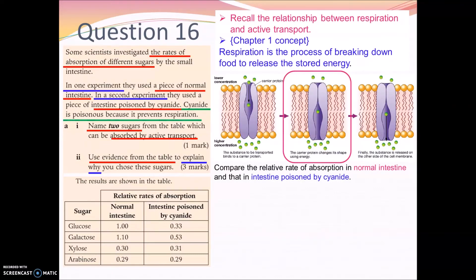For question 16, we are investigating the rate of absorption of different sugars in the small intestine. There are two parts: first using normal intestine, and second using intestine poisoned by cyanide. Cyanide is a poisonous chemical that can inhibit or stop respiration. The core concept here is that you need to relate respiration and active transport together. Respiration is the breakdown of food to release energy — it is an energy-releasing process.